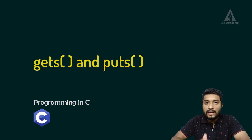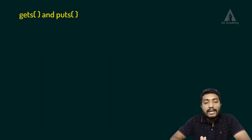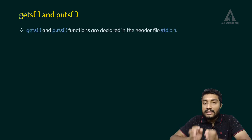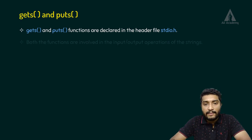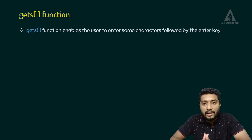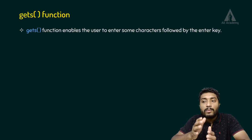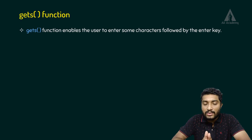In this lecture we are going to discuss getters and putters — gets, puts — and the built-in functions in the C programming language. Gets and puts are built-in functions declared inside the stdio.h header file. The gets function enables the user to enter some characters followed by pressing the Enter key, and it has certain advantages.